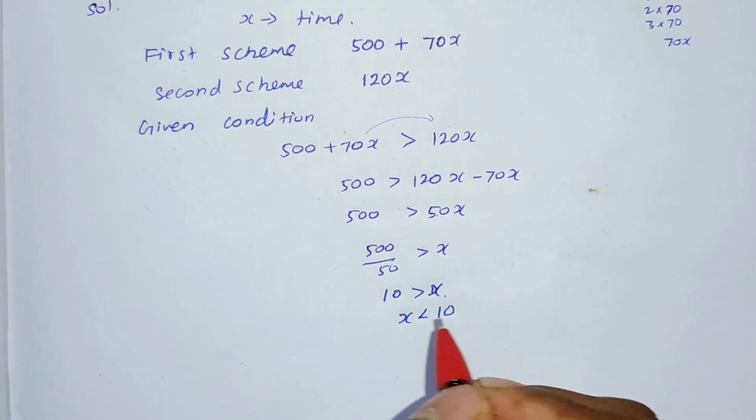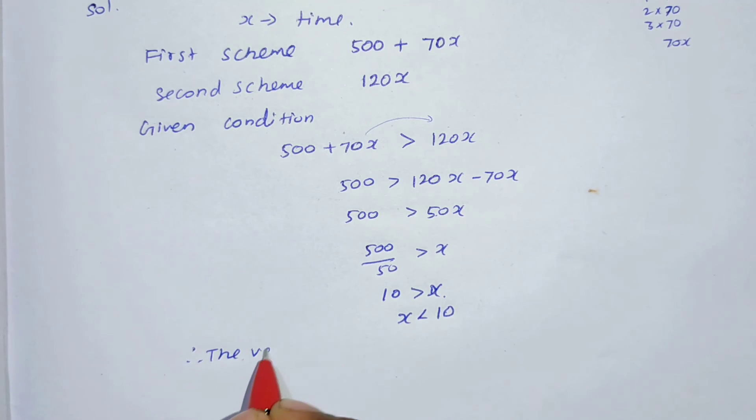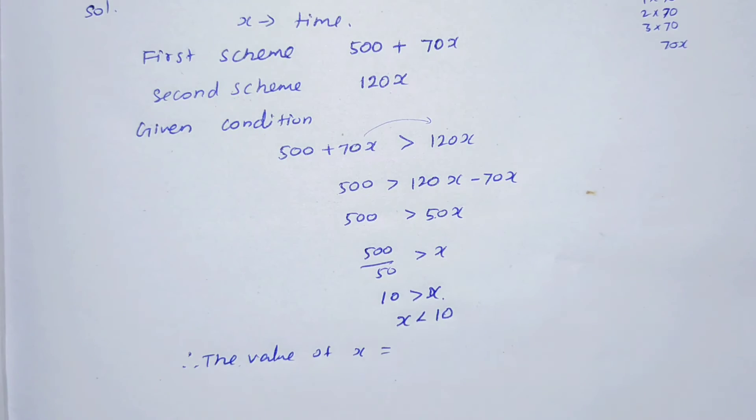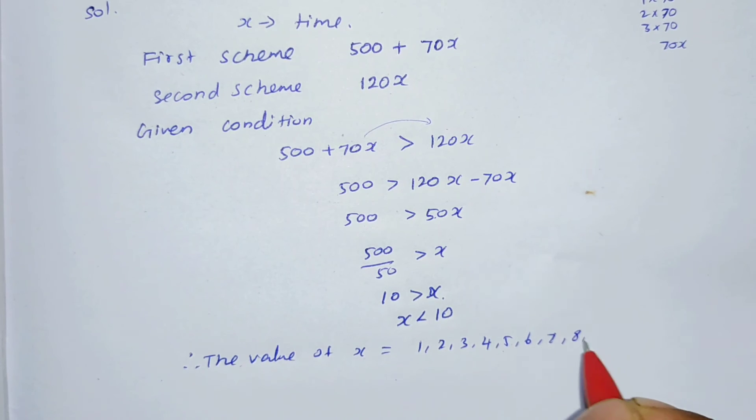Therefore, the value of x for the first scheme to be better. The possible values of x are 1, 2, 3, 4, 5, 6, 7, 8, 9.